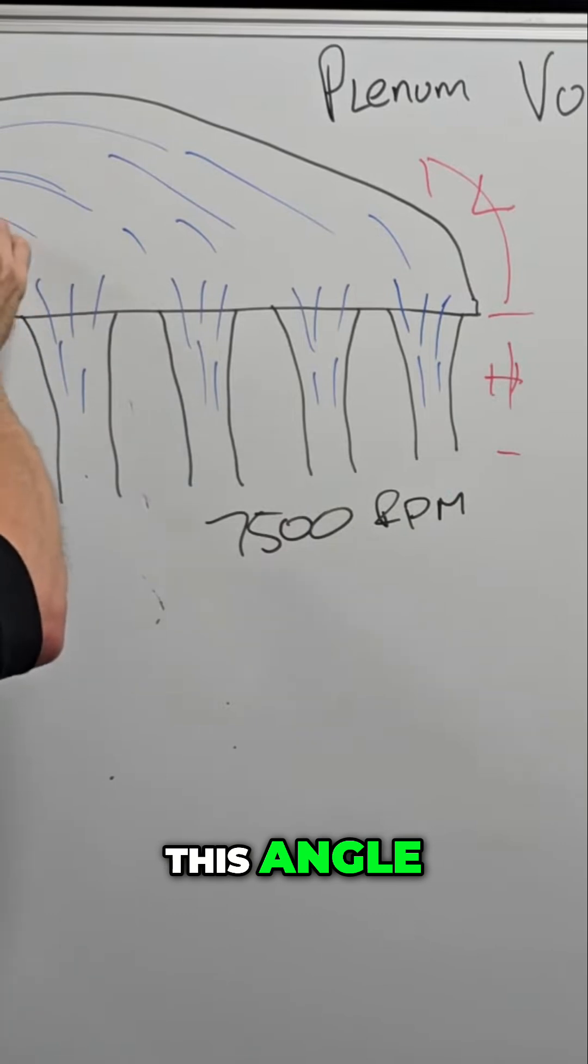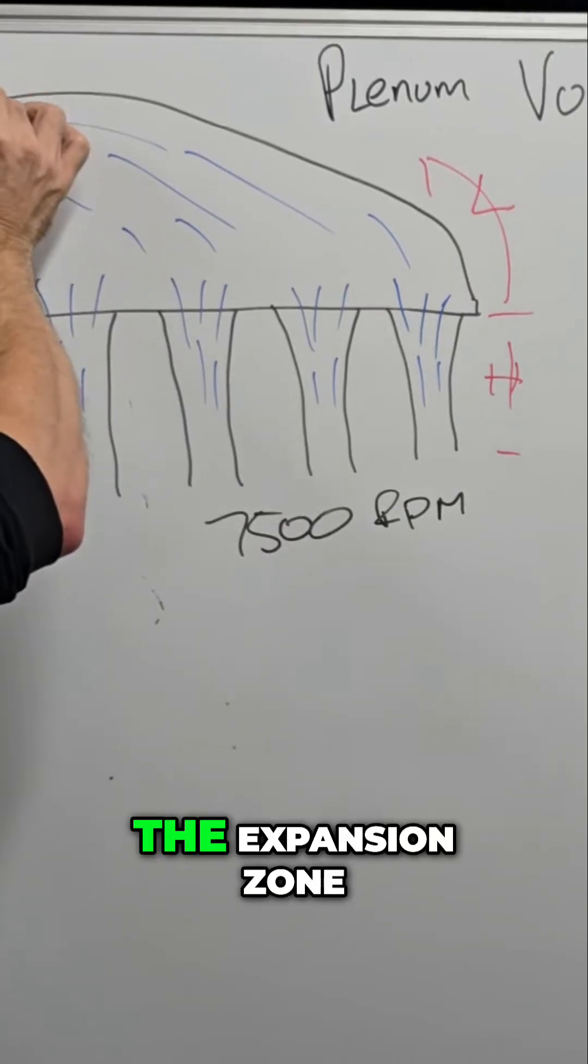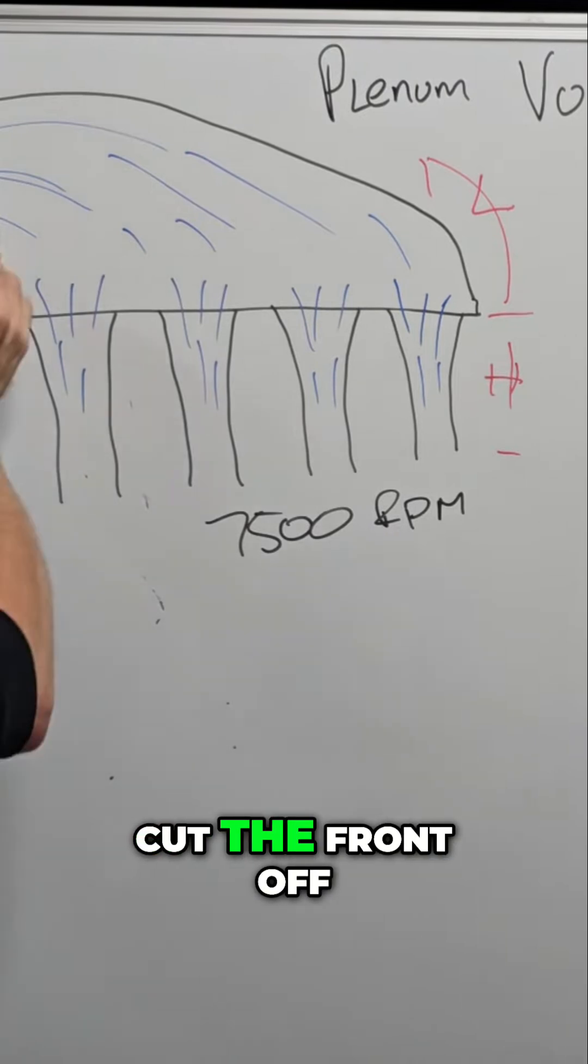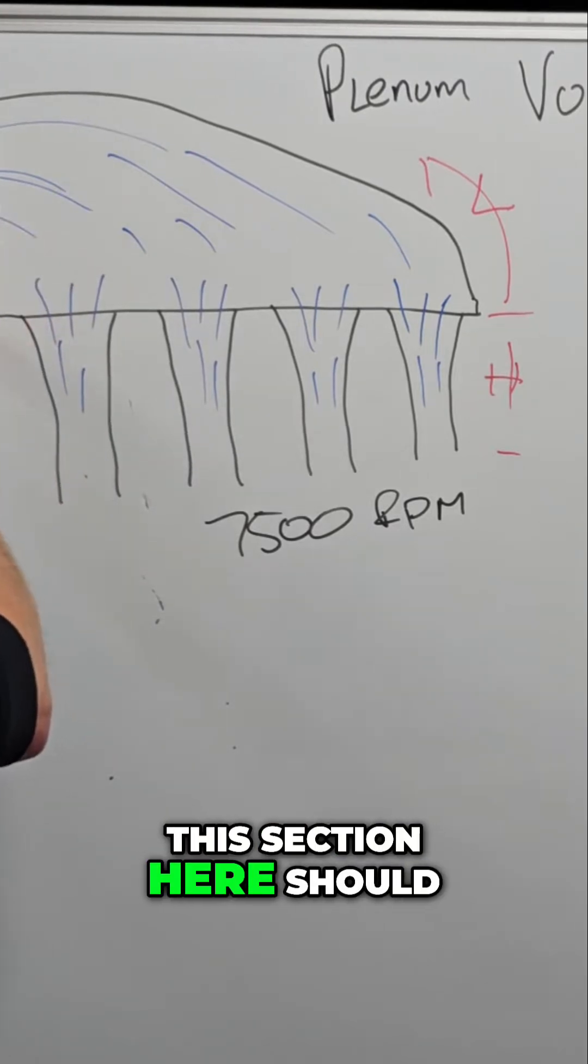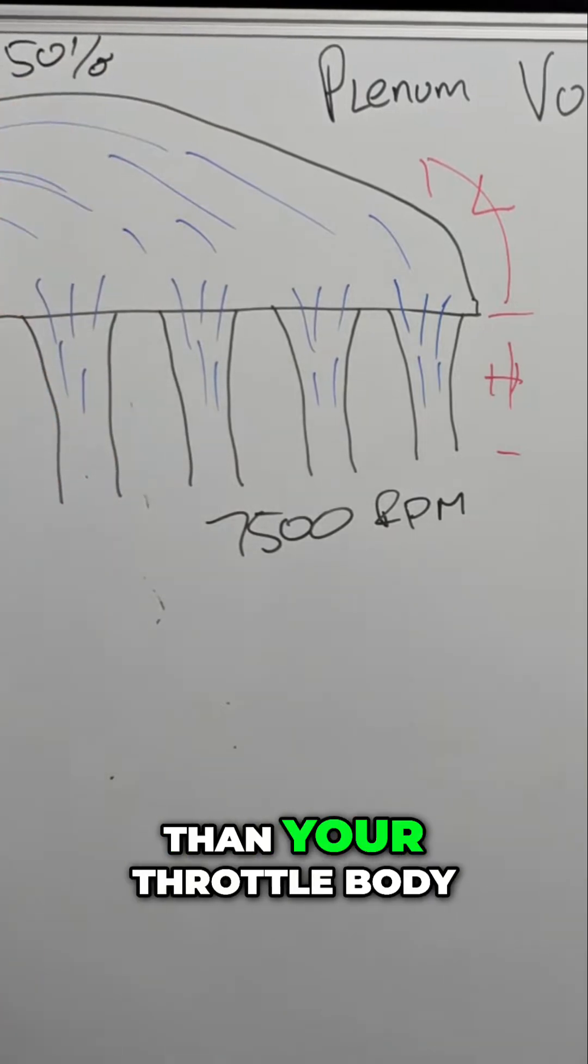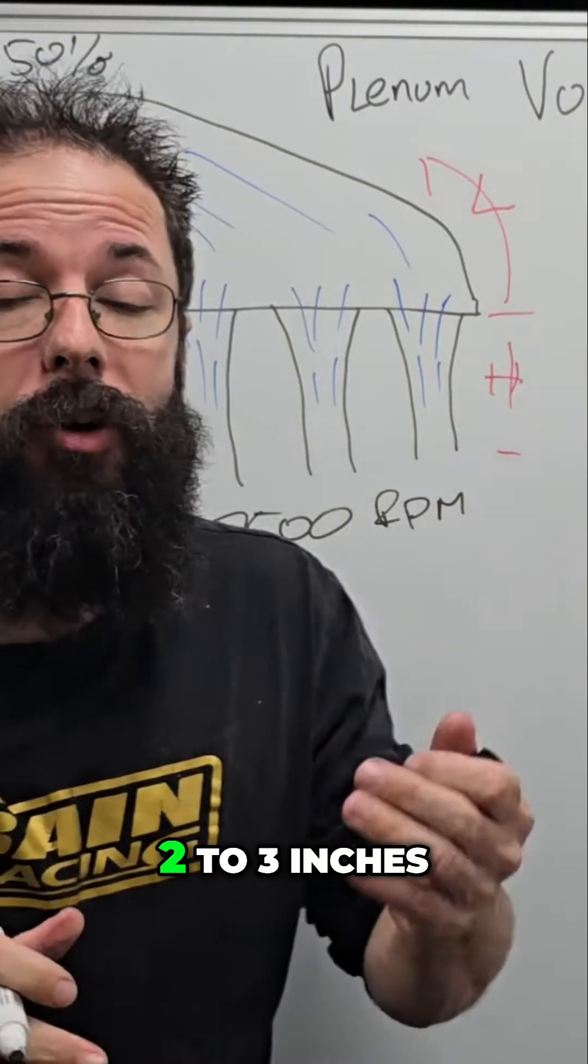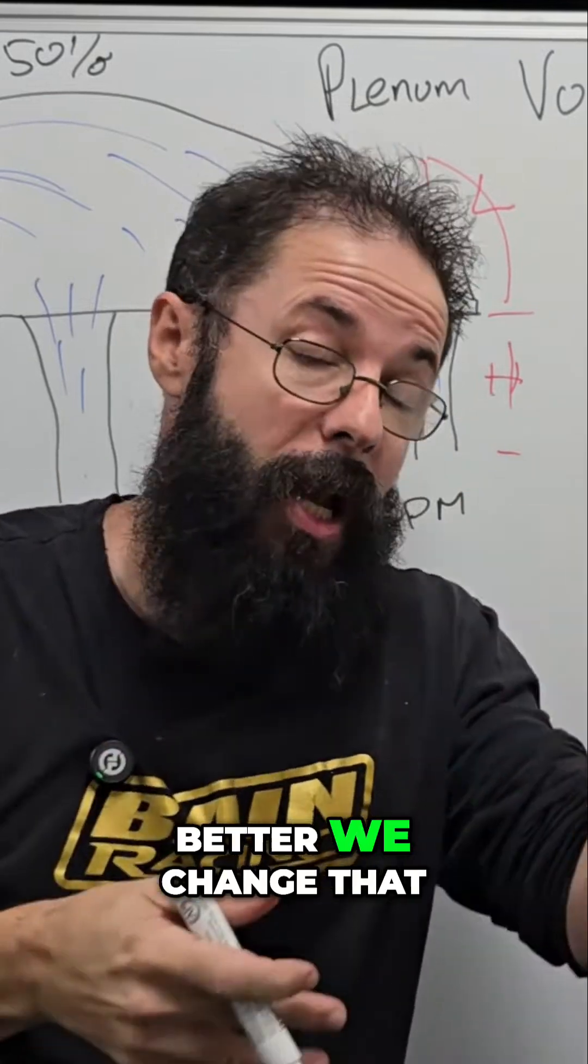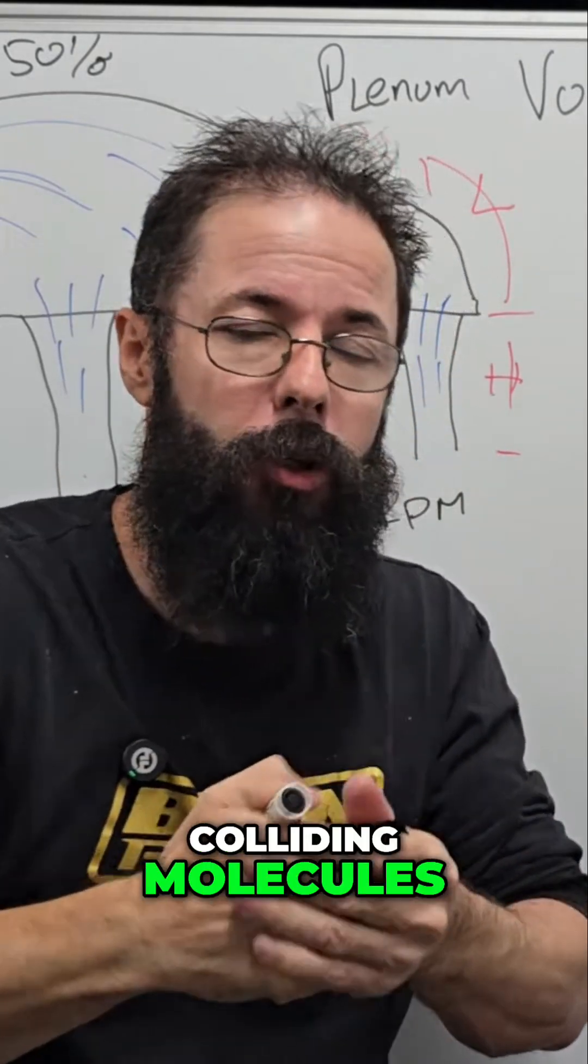So this is why this angle or what I call the expansion zone, which is if we cut the manifold or cut the front off, this section here should be about 150% bigger than your throttle body over a little bit of distance, two to three inches. Obviously the longer we have it over, the better we change that speed and we're not colliding molecules.